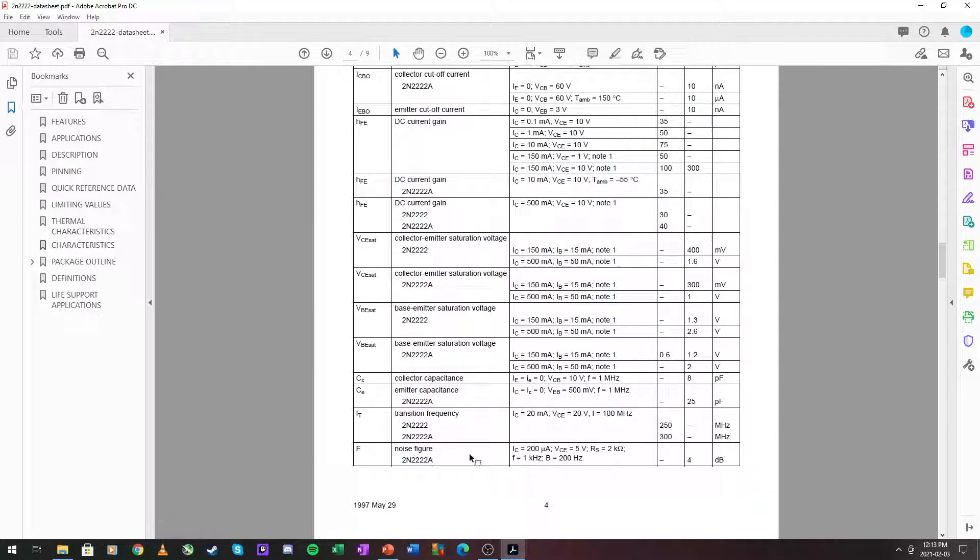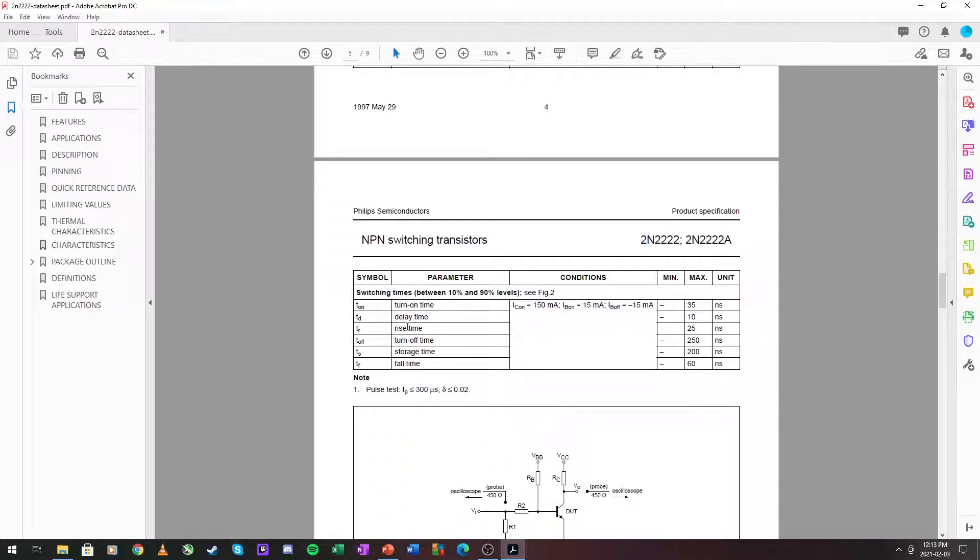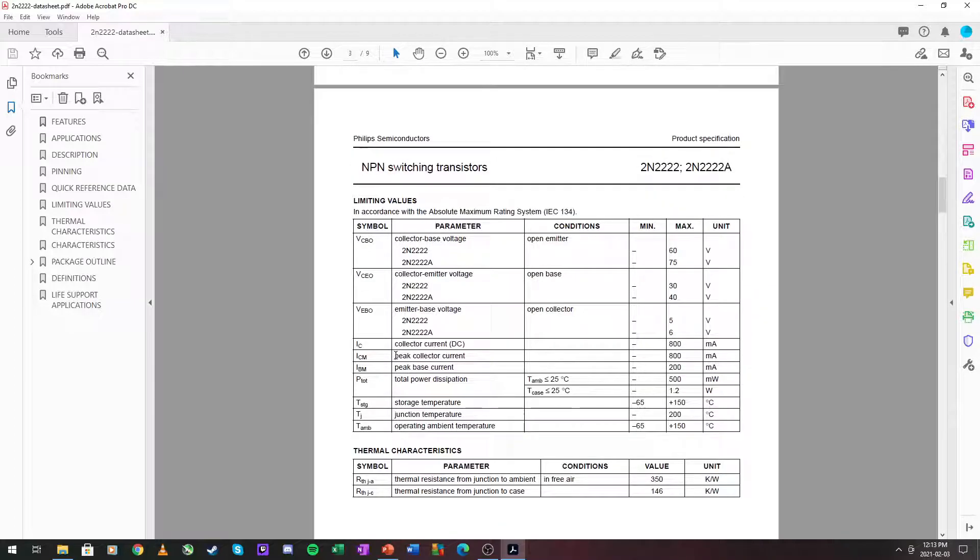The only thing useful you get from the data sheet is usually the transition frequency, and for the 2N2222, is 300 MHz. And then, our collector capacitance at 8 picofarads. But, in general, these are not as useful as they might seem. Then, we have some transition kind of time parameters. Not to be confused with the forward transition time that we are going to use to calculate one of our parameters. The data sheet only gives us so much information about the higher frequencies or the modeling of our transistor.